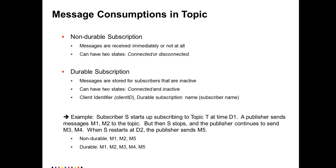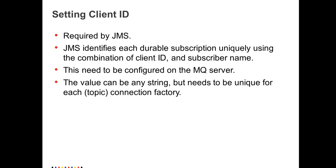So in this scenario, if you are using non-durable subscription: you are connected to the topic, you consume messages M1 and M2, then you disconnect. While disconnected, messages M3 and M4 are sent. With non-durable subscription, you will miss those messages. However, if you are using durable subscription, it will store the messages for you. So when you reconnect, the MQ server will send the messages in order, and you will get messages M1 through M5.